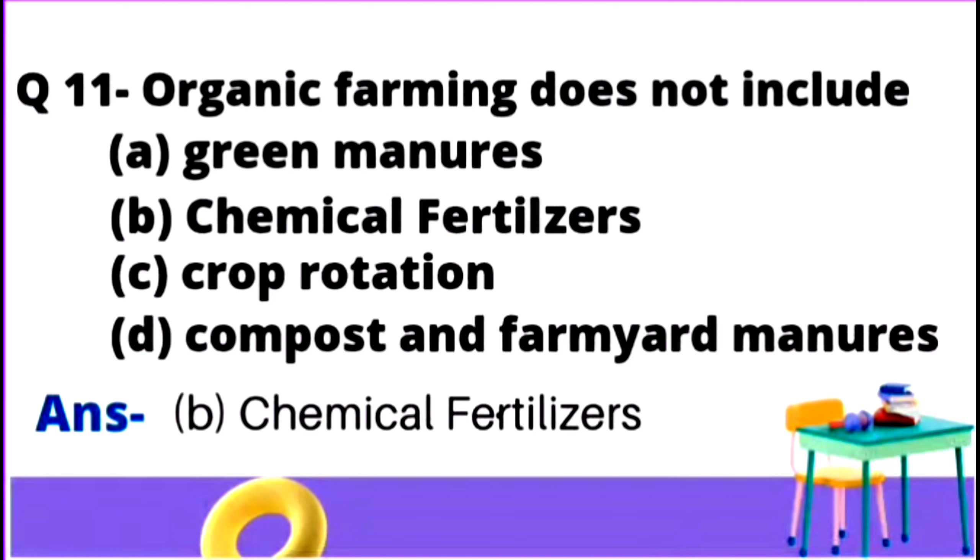We are starting from question number 11, as we have already done 10 questions in part 1. Question 11: Organic farming does not include option A green manures, option B chemical fertilizers, option C crop rotation, and option D compost and farmyard manures.